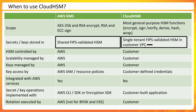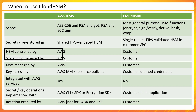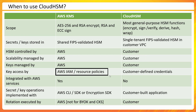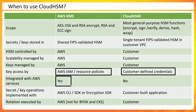Cloud HSM has an integration point in your VPC — when you deploy a Cloud HSM cluster you specify which VPC to connect to and which availability zones it should span. In terms of scalability and management, KMS is managed entirely by AWS including key management, whereas in Cloud HSM everything — control, scalability, and management — is handled by the customer. Key access in KMS is controlled via AWS IAM and resource policies, whereas in Cloud HSM you define your own credentials.